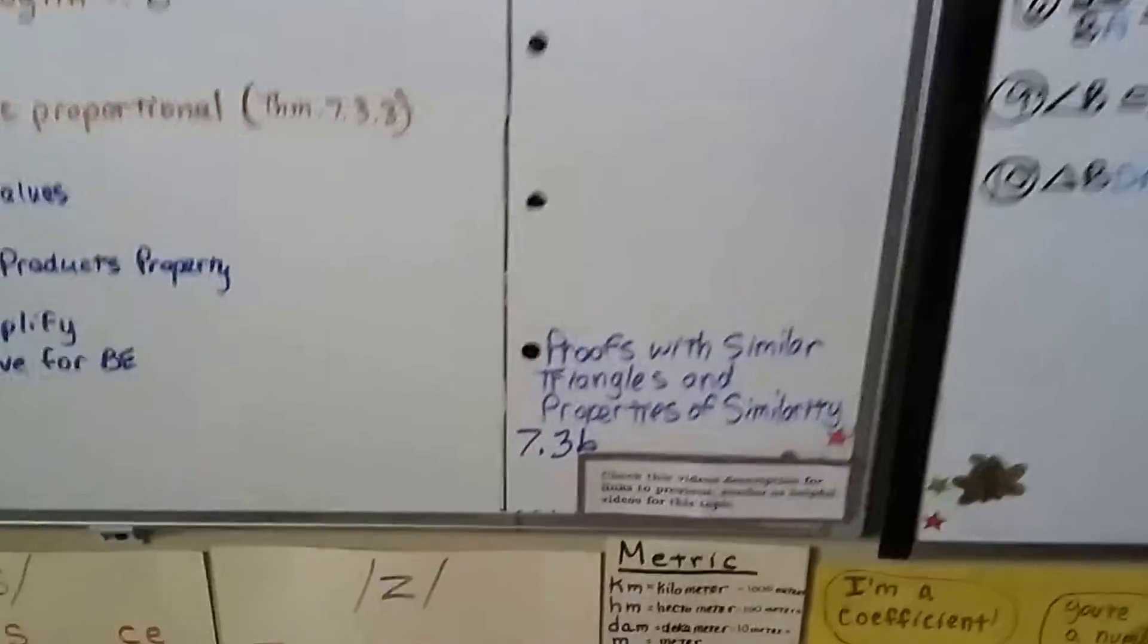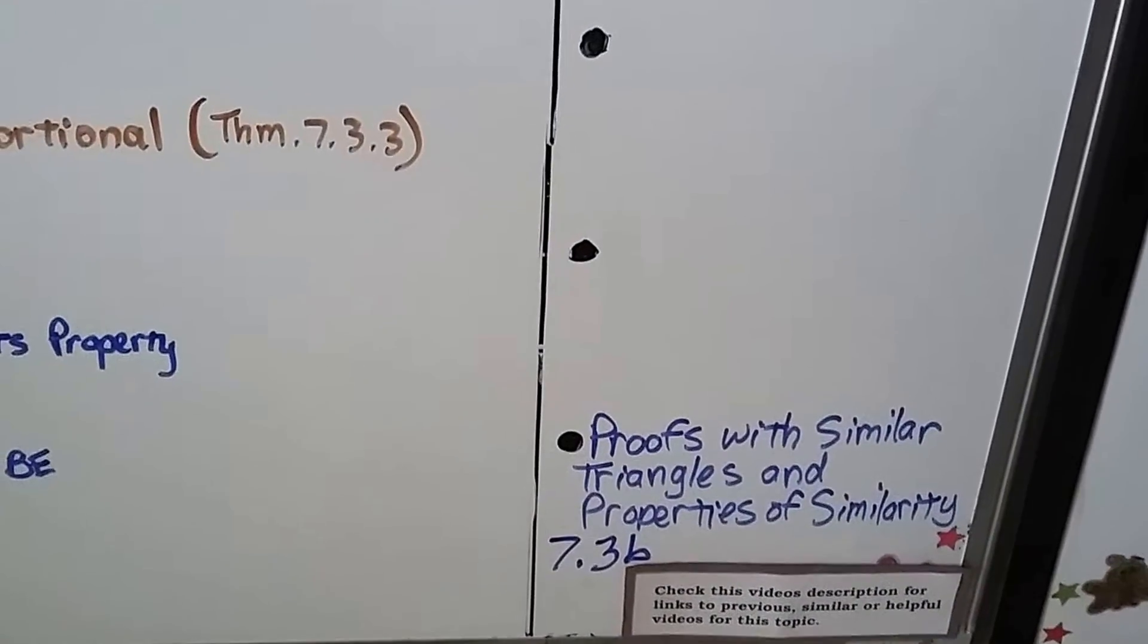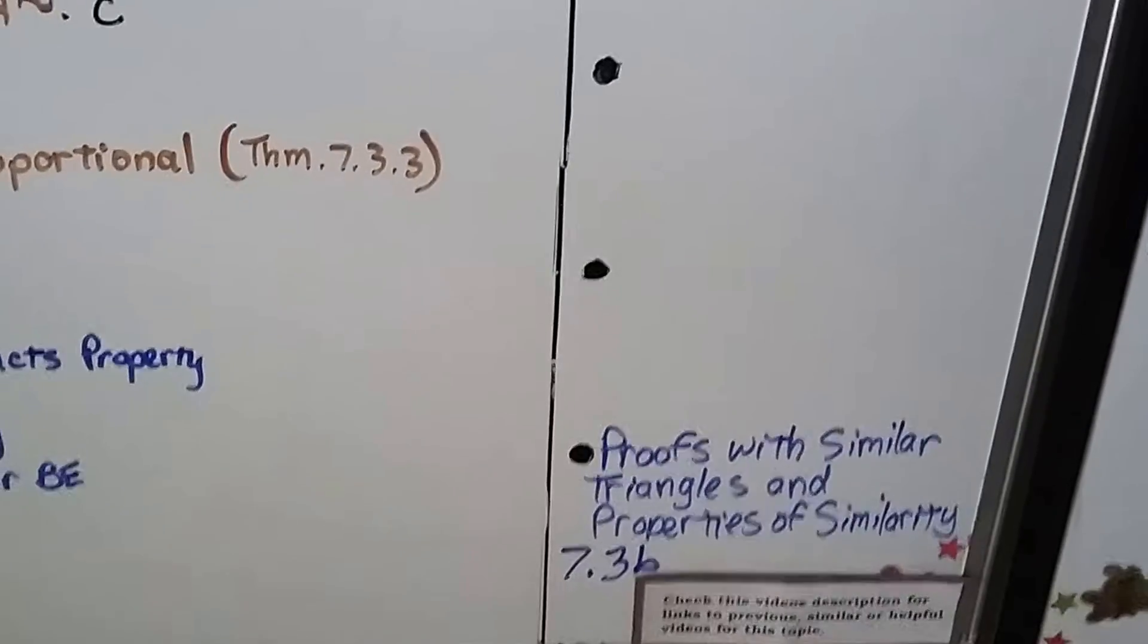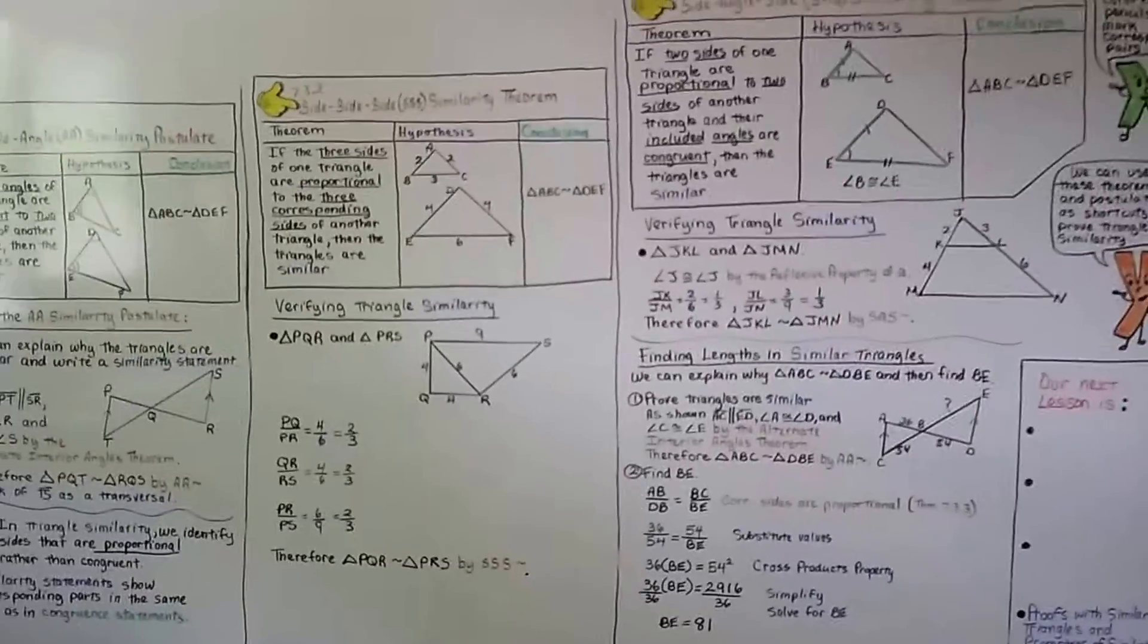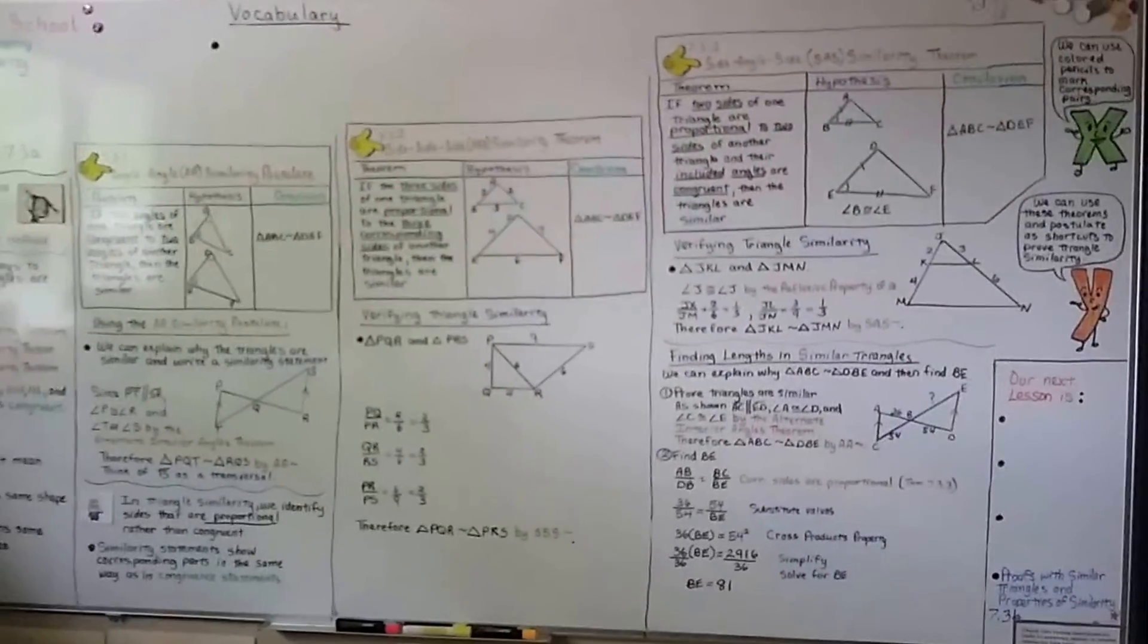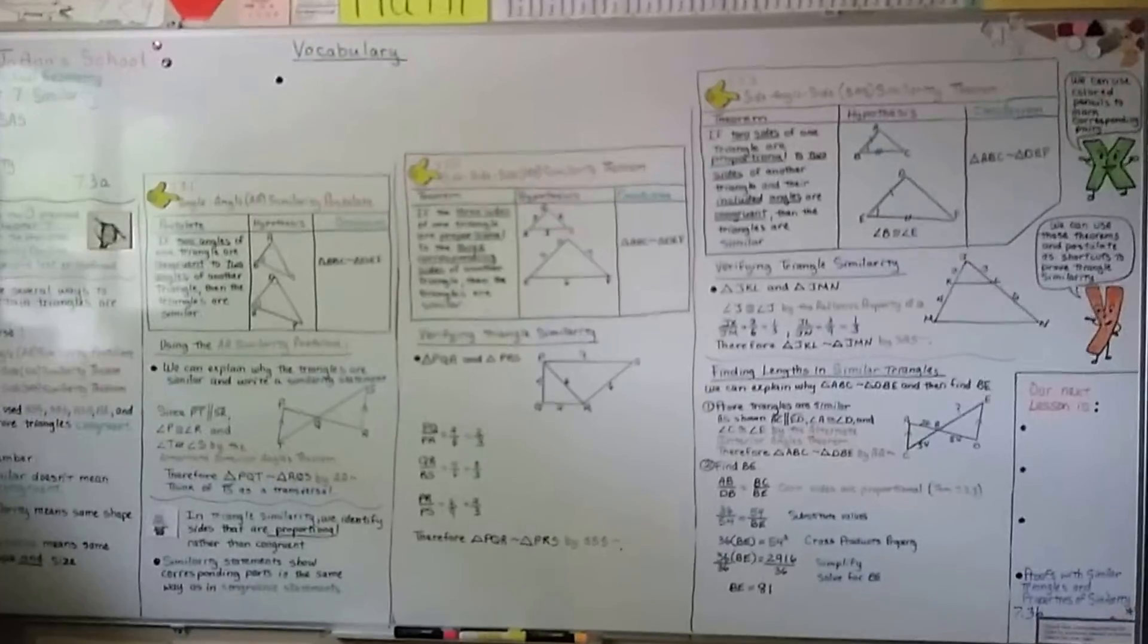Our next video is proofs with similar triangles and properties of similarity. That'll be 7.3B before we move on to 7.4. Hopefully this made sense to you and you're following along. You're writing down the postulates and theorems in your notes, because we need them for our proofs.